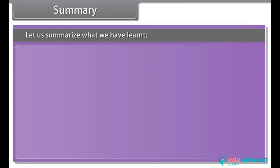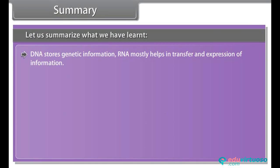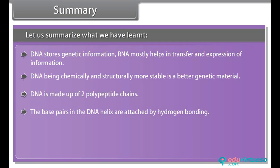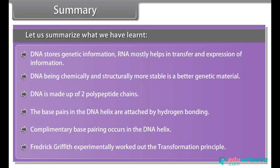Let us summarize what we have learned. DNA stores genetic information; RNA mostly helps in transfer and expression of information. DNA, being chemically and structurally more stable, is a better genetic material. DNA is made up of two polynucleotide chains. The base pairs in the DNA helix are attached by hydrogen bonding. Complementary base pairing occurs in the DNA helix. Frederick Griffith experimentally worked out the transformation principle.